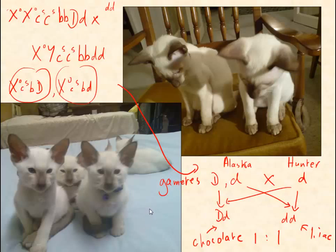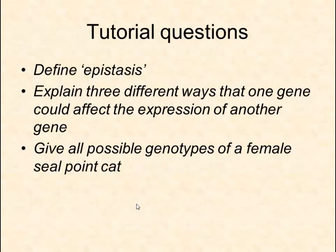Here are the kittens — they're cute! This one is a lilac point, and these two are chocolate points — you can tell because one is slightly darker. Tutorial questions: can you define epistasis? Can you explain three different ways that one gene could affect the expression of another gene? Give all possible genotypes of a female seal point cat.